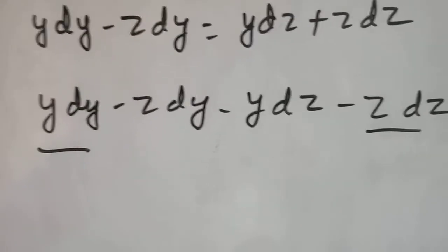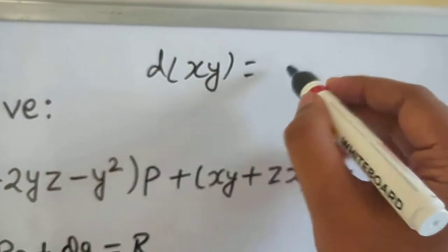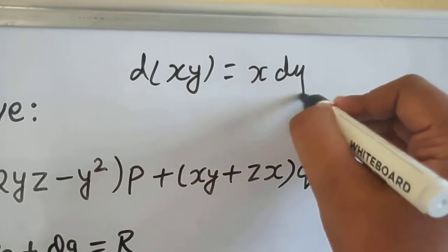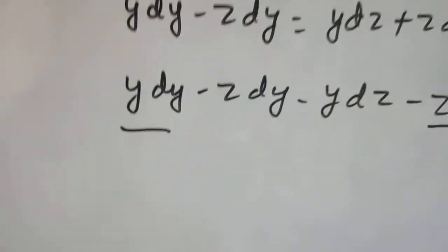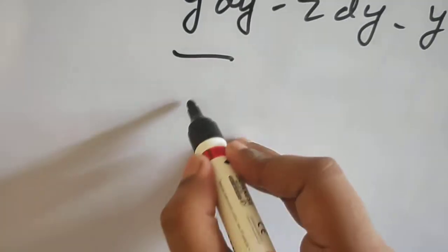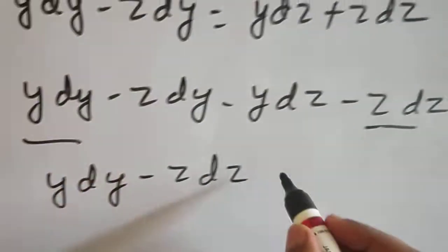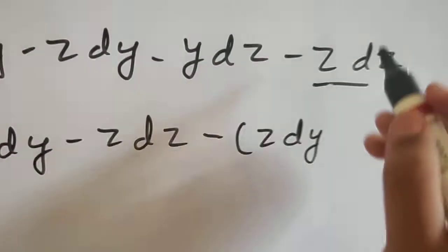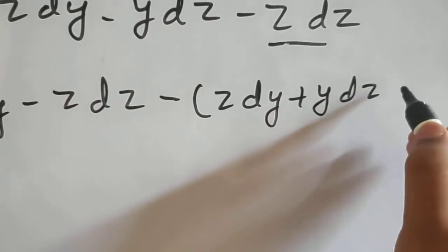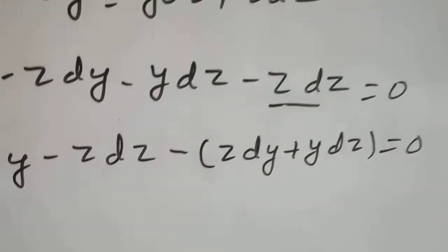If you take minus sign common, can you recall of this thing? D of XY, this is X as it is, that of Y is DY plus Y as it is, that of X is DX. Simple, so if you take these terms, YDY minus ZDZ and from these two, if you can take minus sign common, so you are left with ZDY plus YDZ. Of course, this is equal to 0 because I bring everything to the left hand side.